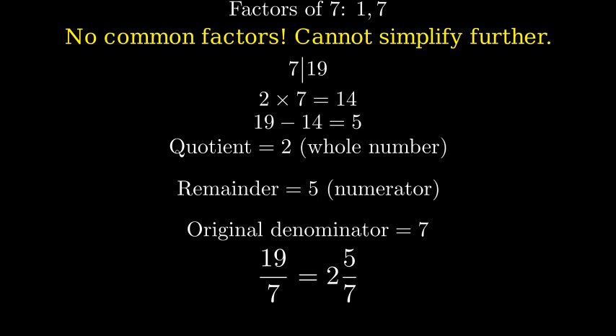Let's verify our answer. To convert 2 and 5 sevenths back to an improper fraction, we multiply 2 times 7, which is 14, add 5, which gives us 19, and put that over 7. This confirms our answer is correct.